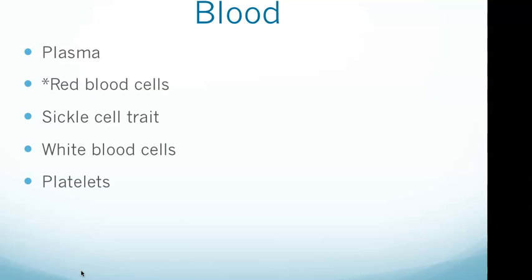Blood is an essential bodily fluid that transports oxygen and nutrients to the tissues and removes waste products including carbon dioxide and ammonia. The four main components of human blood are red blood cells, white blood cells, platelets, and plasma. Plasma is the liquid component of blood and accounts for about half the blood volume. Red blood cells account for the second greatest component by volume. The functional unit of red blood cells is hemoglobin, an iron-containing protein that facilitates gas exchange by binding to either oxygen or carbon dioxide.